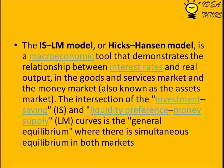The IS-LM model, or Hicks-Hansen model, is a macroeconomic tool that demonstrates the relationship between interest rates and real output in the goods and services market and the money market, also known as the assets market. The intersection of the Investment-Saving (IS) and Liquidity Preference-Money Supply (LM) curves is the general equilibrium where there is simultaneous equilibrium in both markets.